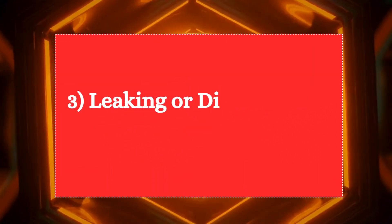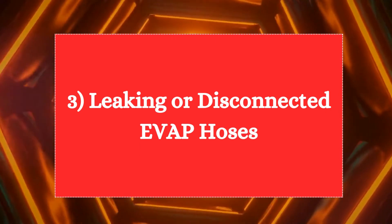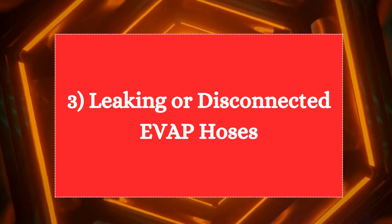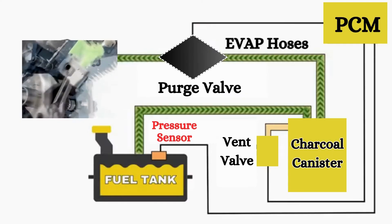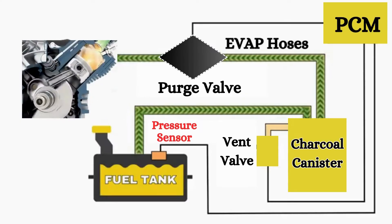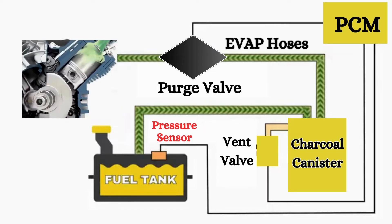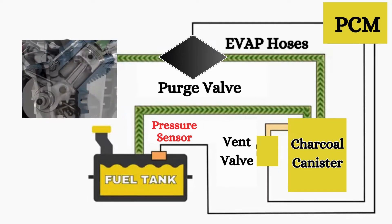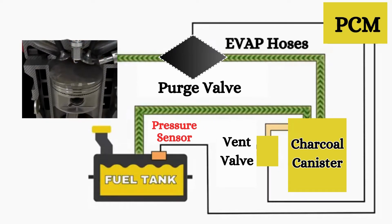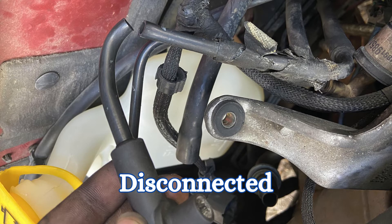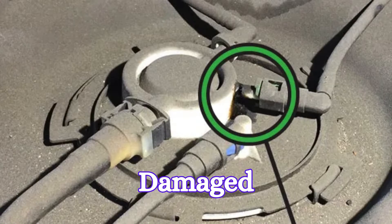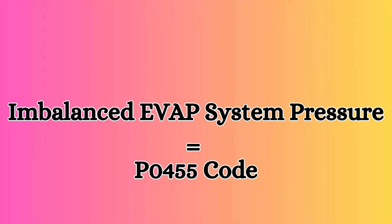3. Leaking or disconnected EVAP hoses. EVAP hoses carry fuel vapors between the fuel tank, canister, and engine. Cracked, disconnected, or damaged hoses allow vapors to escape, causing a pressure imbalance and setting off the P0455 code.